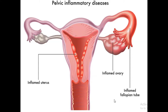Hey guys, welcome back to the DNN Medical Series, it's your girl Nikki. Today we'll be talking about pelvic inflammatory disease, or PID. This is basically an infection of the female reproductive organs. You can see here an inflamed ovary, inflamed uterus, and inflamed fallopian tubes.